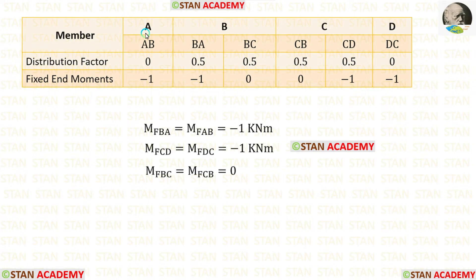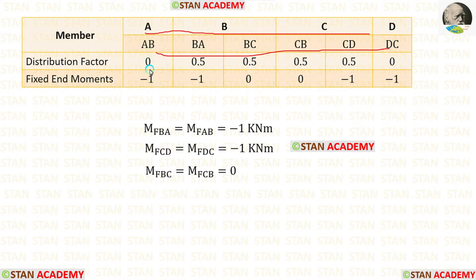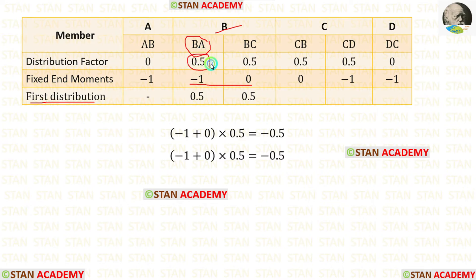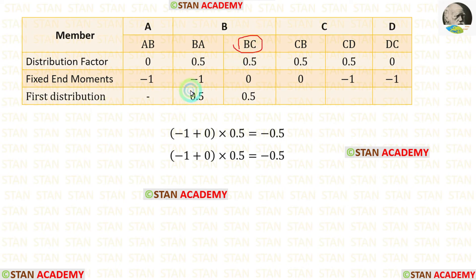Now let us start making the moment distribution table. We enter the members, then the distribution factor values, then the fixed end moments. For the first distribution at joint B: for BA, we add the two fixed end moments and multiply with the distribution factor at BA — we get a negative value, so we enter it as positive. For BC, similarly, we add the values and multiply with the distribution factor at BC — we get a negative value, so we enter it as positive.